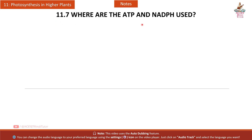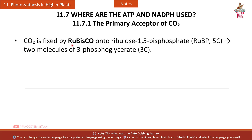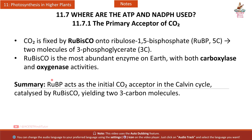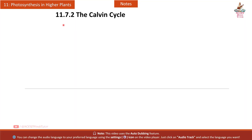Section 11.7 — Where are ATP and NADPH used? CO2 is fixed by Rubisco onto ribulose-1,5-bisphosphate (RuBP, 5C) to yield two molecules of 3-phosphoglycerate (3C). Rubisco is the most abundant enzyme on Earth, with both carboxylase and oxygenase activities. RuBP acts as the initial CO2 acceptor in the Calvin cycle, yielding two 3-carbon molecules.